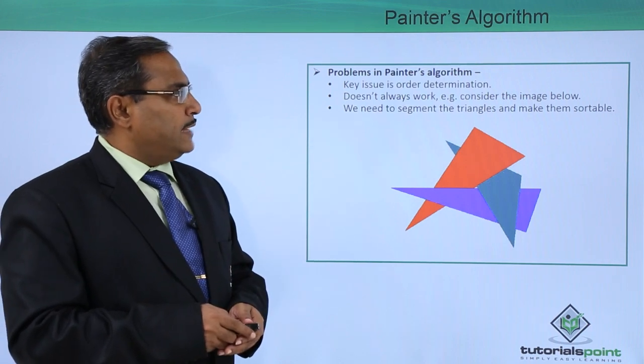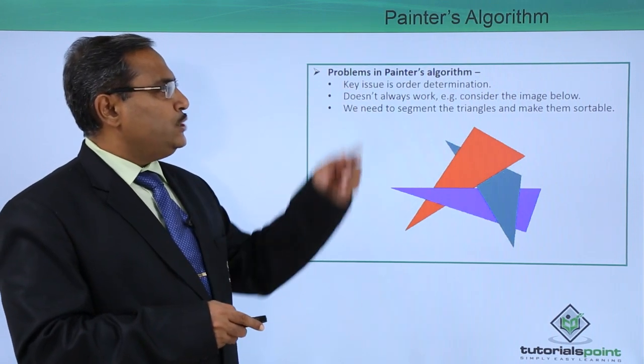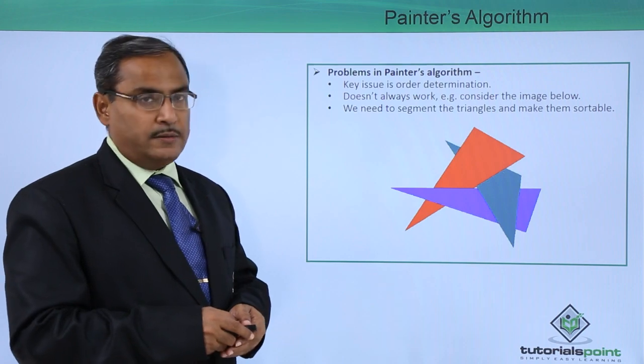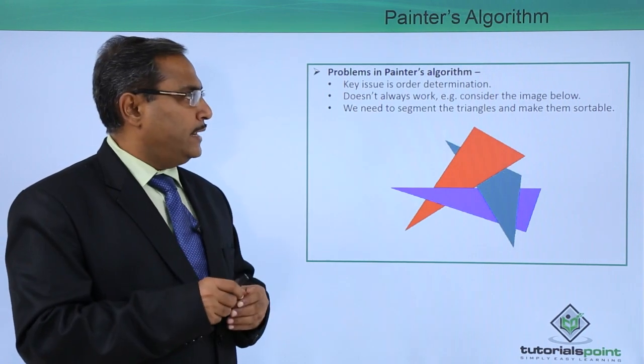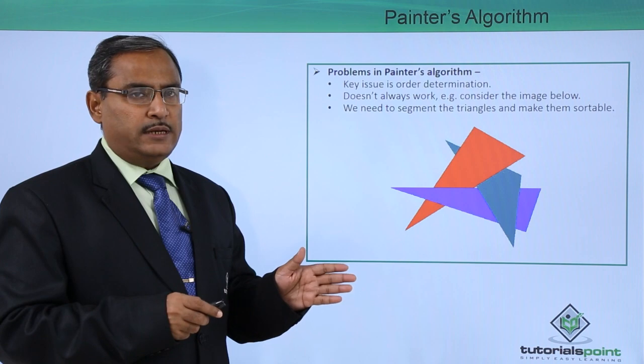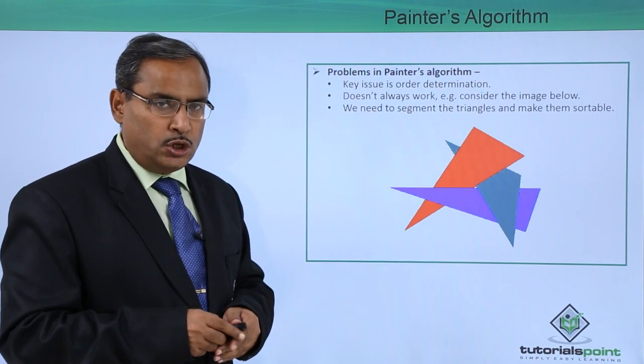The problems in the Painter's algorithm: the key issue is order determination. The main key issue of this Painter's algorithm is the order determination, that means in which order we should draw.